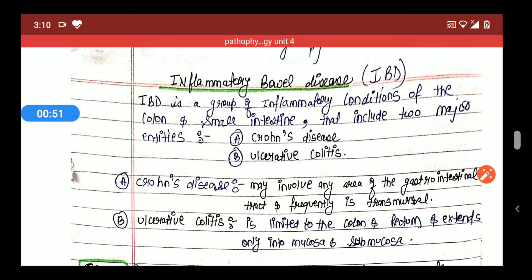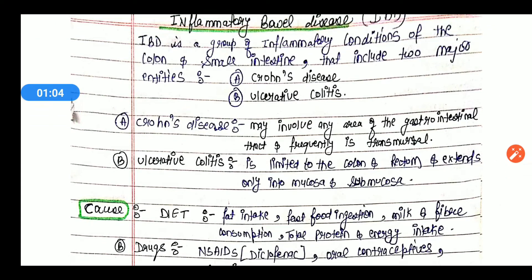So what is Crohn's disease and what is ulcerative colitis? Crohn's disease may involve any area of the GIT and frequently it's transmural. In Crohn's disease, inflammation occurs but the major difference is the location. In Crohn's disease, the entire GIT area is covered and frequently it's transmural, meaning throughout the wall of the organ inflammation is caused. This condition is called Crohn's disease.